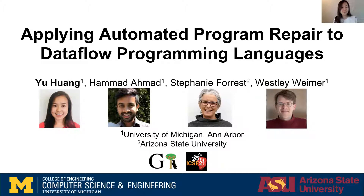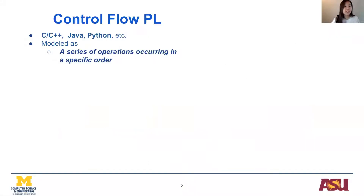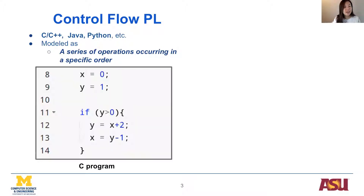In the past, a significant amount of research has been done to repair bugs in imperative programs, and almost all of it has focused on the control flow program language family. In C, Java, and Python, programs are modeled as a series of operations occurring in a specific order, as in this example of a C program.